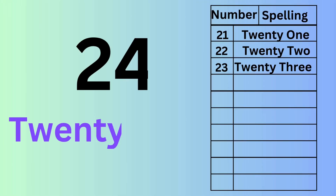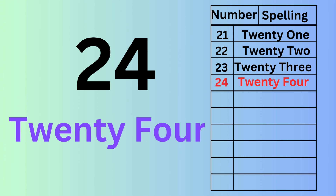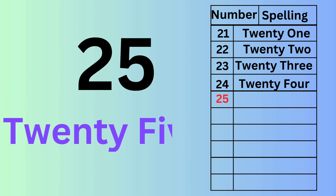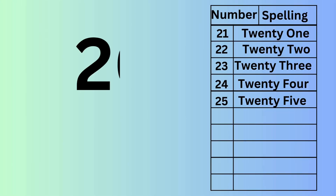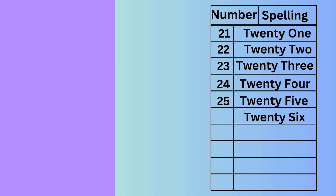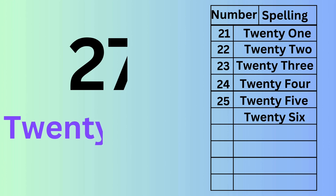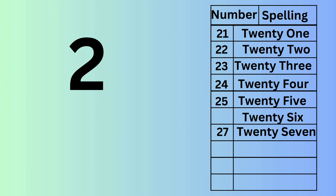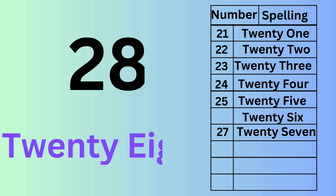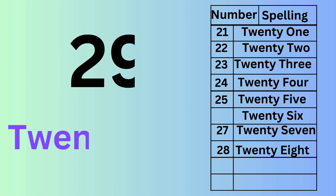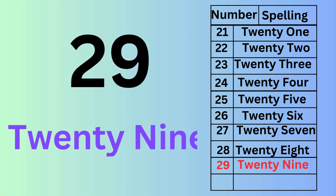T-W-E-N-T-Y-F-O-U-R, twenty-four, 24. T-W-E-N-T-Y-F-I-V-E, twenty-five, 25. T-W-E-N-T-Y-S-I-X, twenty-six, 26. T-W-E-N-T-Y-E-I-G-H-T, twenty-eight, 28. T-W-E-N-T-Y-N-I-N-E, twenty-nine, 29.